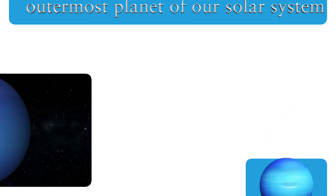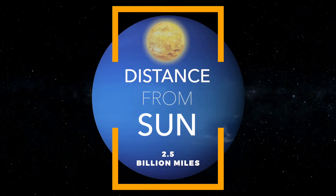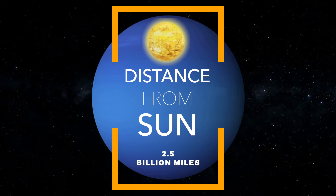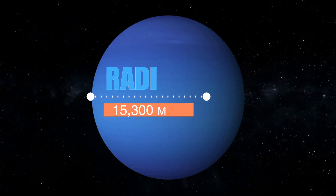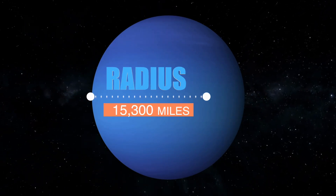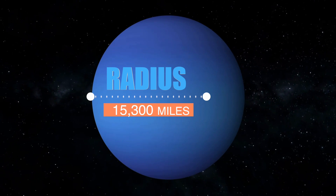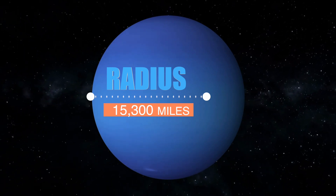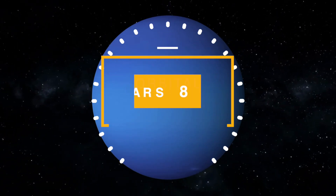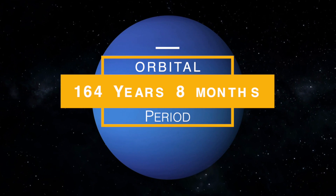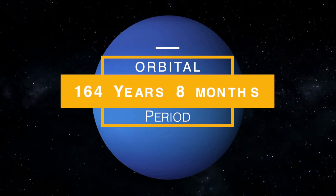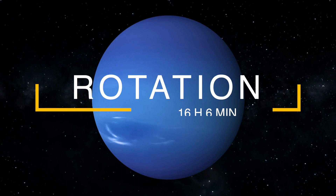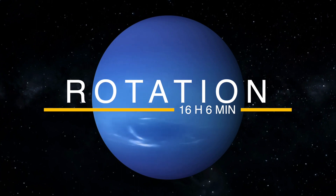Neptune is the outermost planet of our solar system and the one furthest away from Earth. Neptune is on average about 2.5 billion miles from the sun. It has a radius of 15,300 miles, making it the fourth largest planet in the solar system. It takes 164 Earth years and eight months to complete one orbit around the sun.